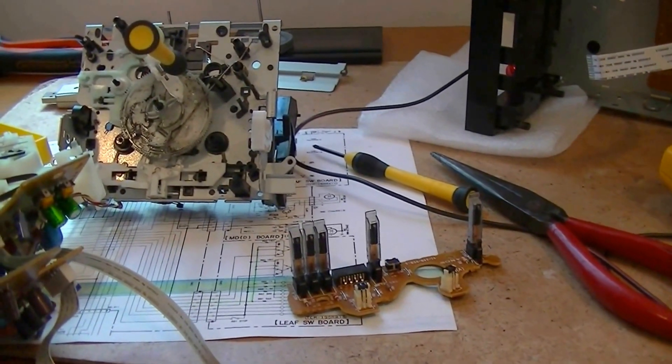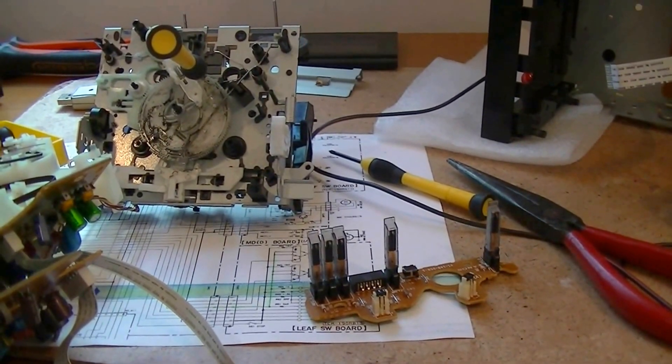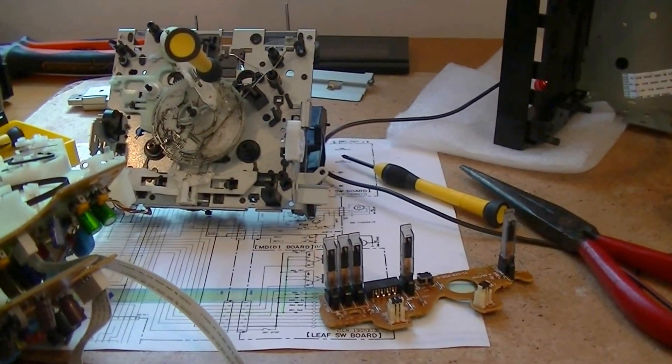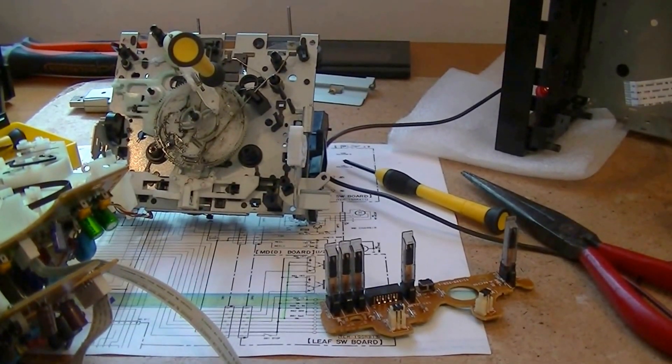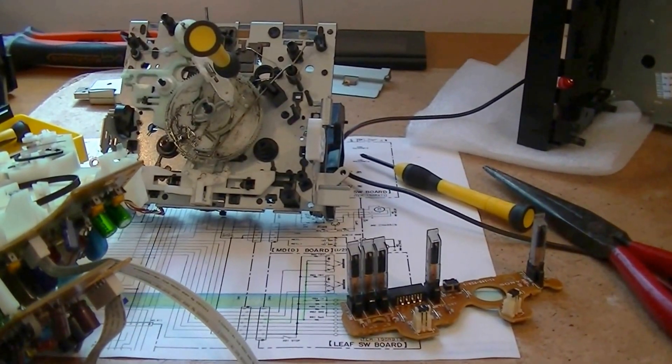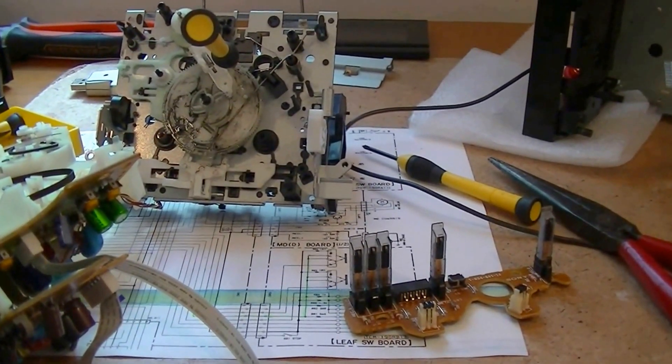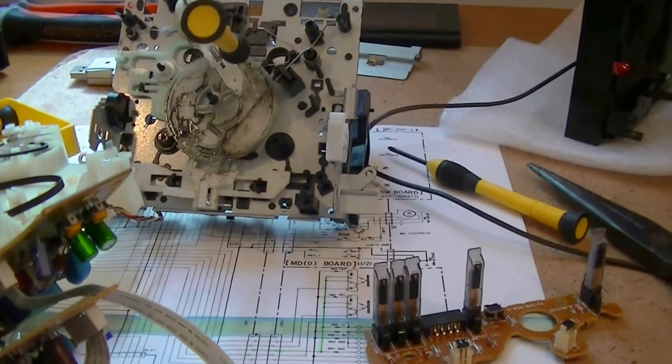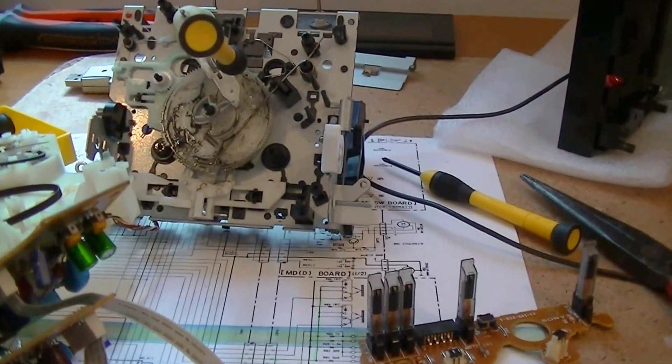The autostop function tries to detect whether the tape is running or not. If the tape is stopped, they must switch the mechanism to stop mode, preventing any tape jam as a result of the capstan still running and the mechanism being engaged in play position.